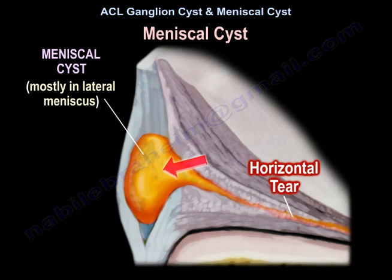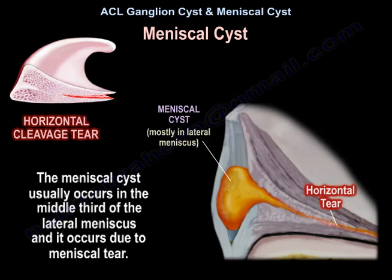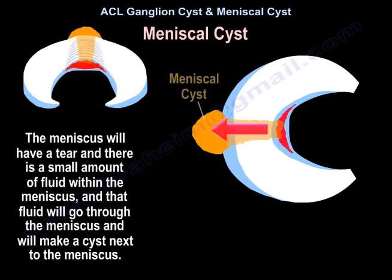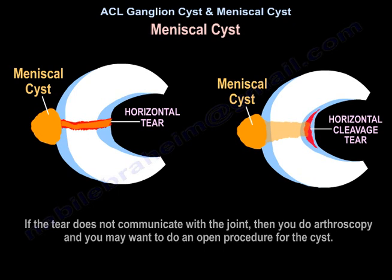The meniscal cyst usually occurs in the middle third of the lateral meniscus and occurs due to a meniscal tear. The meniscus has a tear, and a small amount of fluid within the meniscus travels through and forms a cyst next to the meniscus. It is usually seen in a horizontal or horizontal cleavage tear. If the tear communicates with the joint, arthroscopic partial meniscectomy and cyst decompression can be done. If not, arthroscopy plus an open procedure for the cyst may be needed.